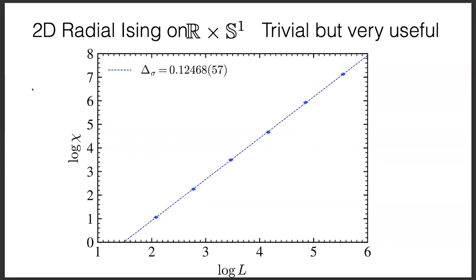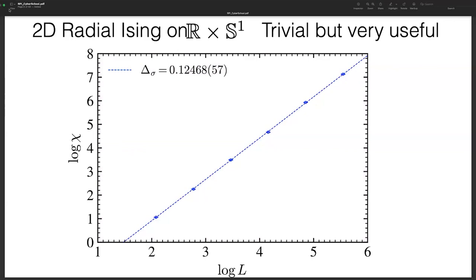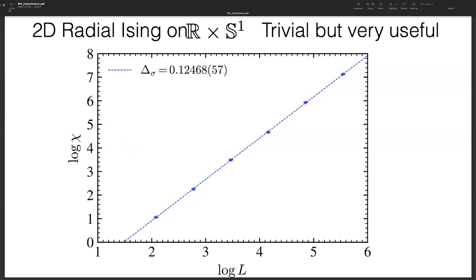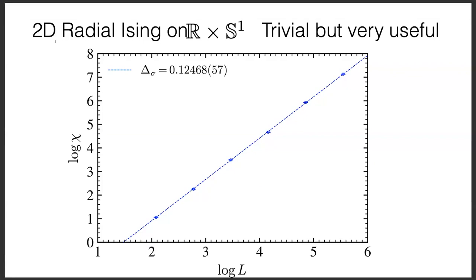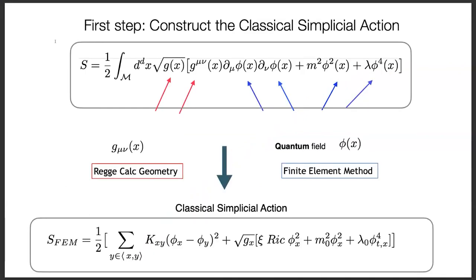We got the exponent right to four decimal places, and it wasn't a large calculation — you can do it on your laptop. That's the advantage of being small.